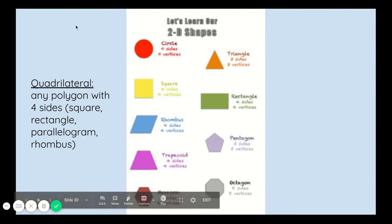Let's review some 2D shapes. Ones that we all know: circle, triangle, square, and rectangle.